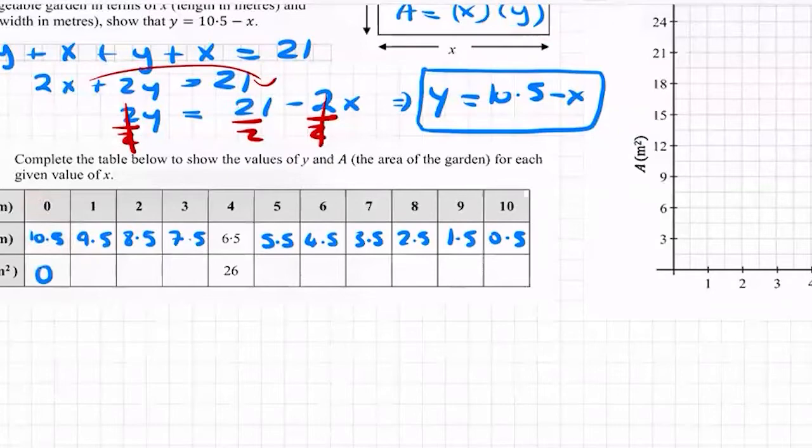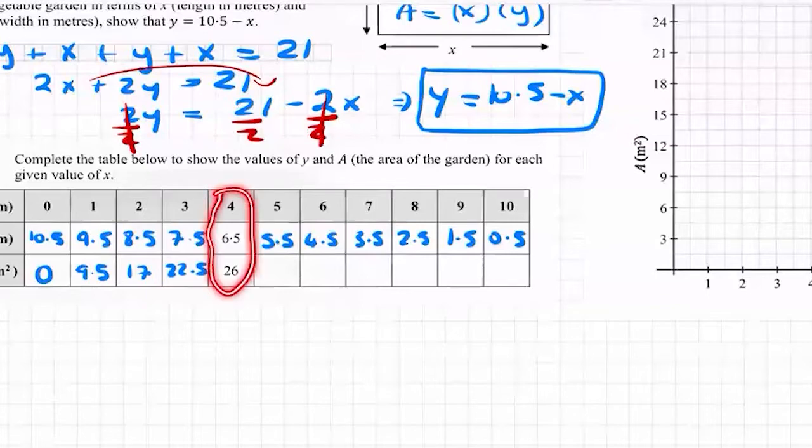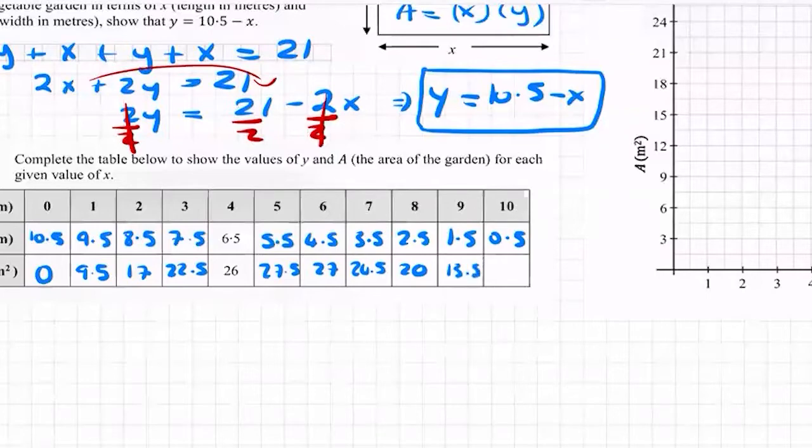9.5 by 1 is 9.5, 8.5 by 2 is 17, 7.5 by 3 is 22.5. Even though it gives me the answer, I always work it out to make sure I'm on the right track. 6.5 by 4 is 26, 5.5 by 5 is 27.5, 6 by 4.5 is 27, 7 by 3.5 is 24.5, 8 by 2.5 is 20, 9 by 1.5 is 13.5, and 10 by 0.5 is 5.